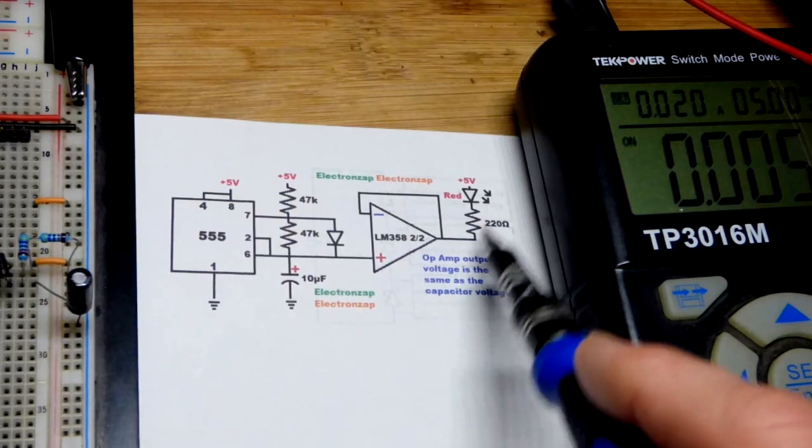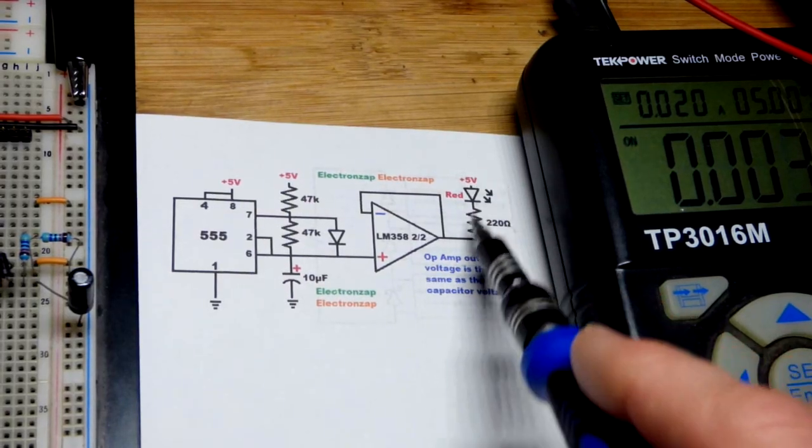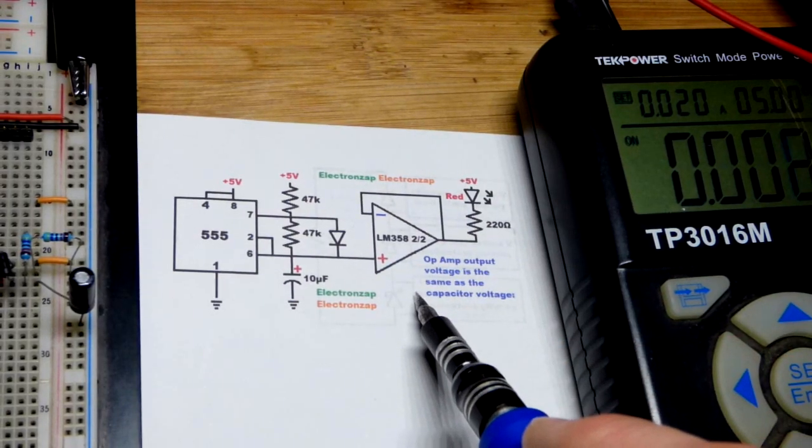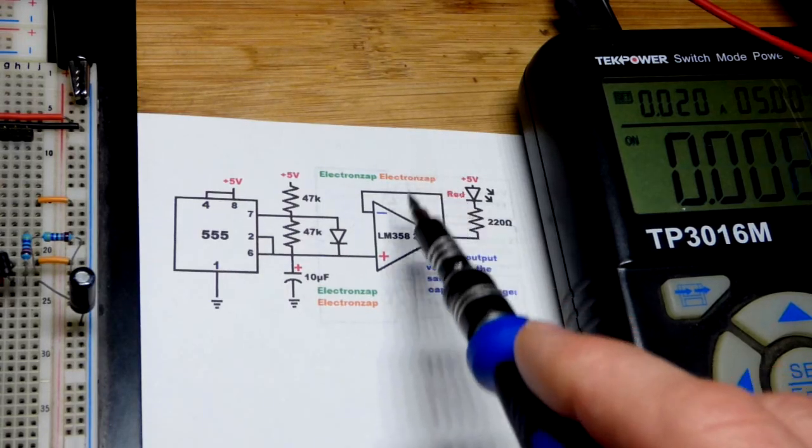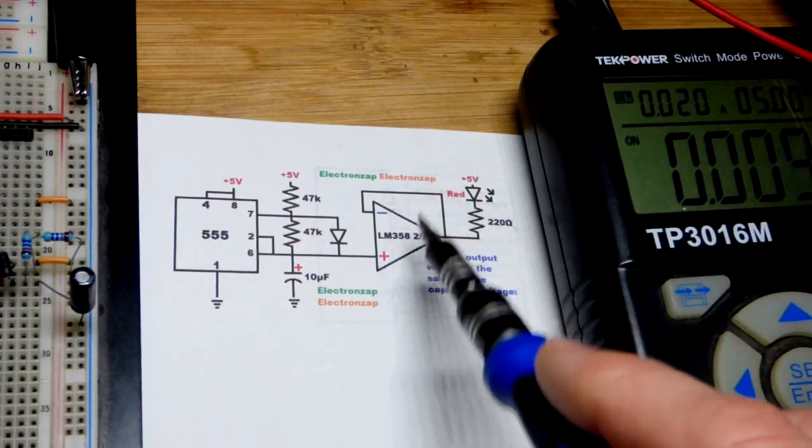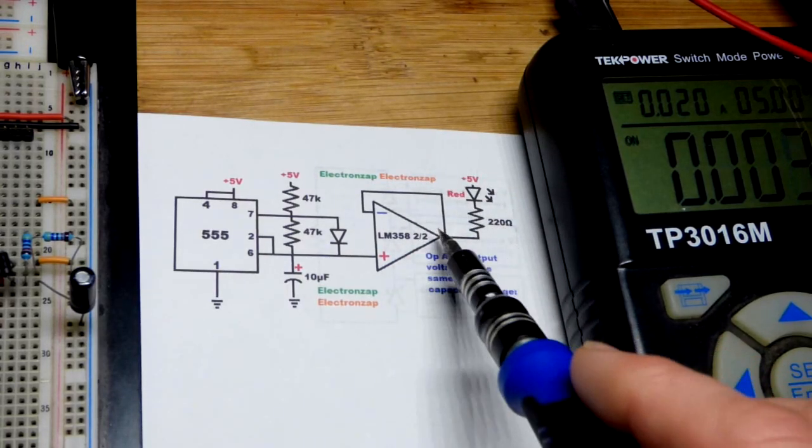The LED gets brighter when the output gets closer to ground, and as the output voltage goes up, the LED gets dimmer because there's no voltage difference.